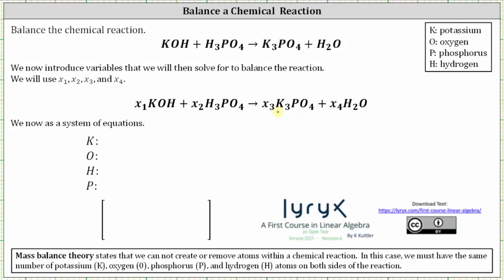Now we write a system of equations using each type of atom. Let's first focus on potassium, which appears here and here. On the left we have one atom of potassium; on the right we have three. Therefore, x sub one times one must equal three times x sub three, or x sub one must equal three x sub three.